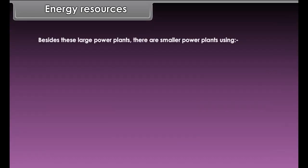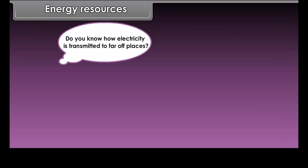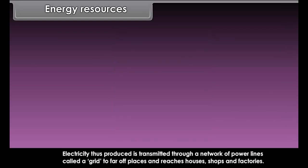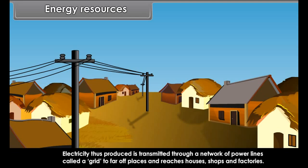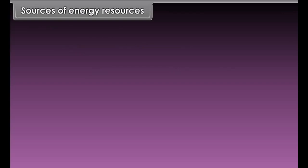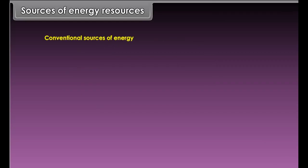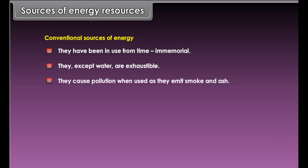Which are the sources through which electricity is produced? Electricity is produced from large power plants. Thermal or heat plants burn coal or natural gas. Nuclear plants use nuclear fuel such as uranium, thorium, etc. Hydroelectric power plants use the force of falling water. Besides these large power plants, there are smaller power plants using geothermal sources, solar sources and wind sources. Electricity thus produced is transmitted through a network of power lines called a grid. Electricity is delivered to far off places and reaches houses, shops and factories.